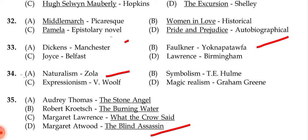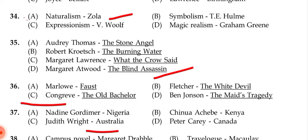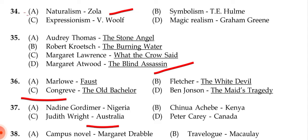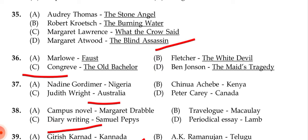Question 33: The correct answer is (b): Faulkner is matched with Yoknapatawpha. Other options included Dickens/Manchester, Joyce/Belfast, and Lawrence/Birmingham. Question 34: The correct answer is naturalism matched with Zola. Question 35: The correct answer is (d): Margaret Atwood with 'The Blind Assassin'.